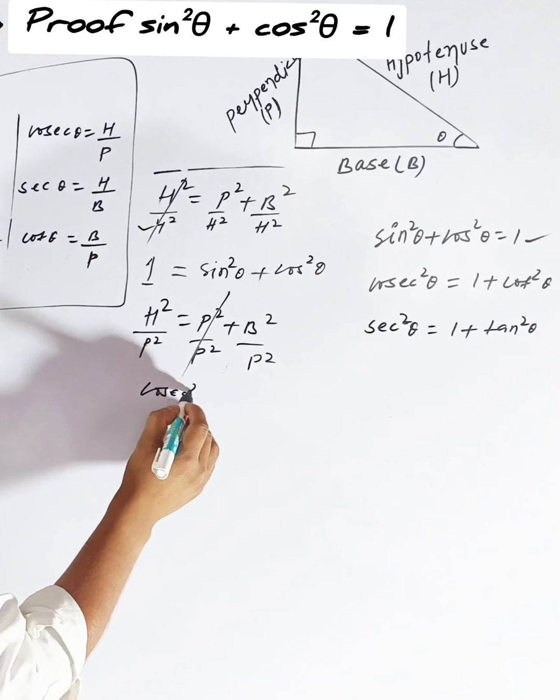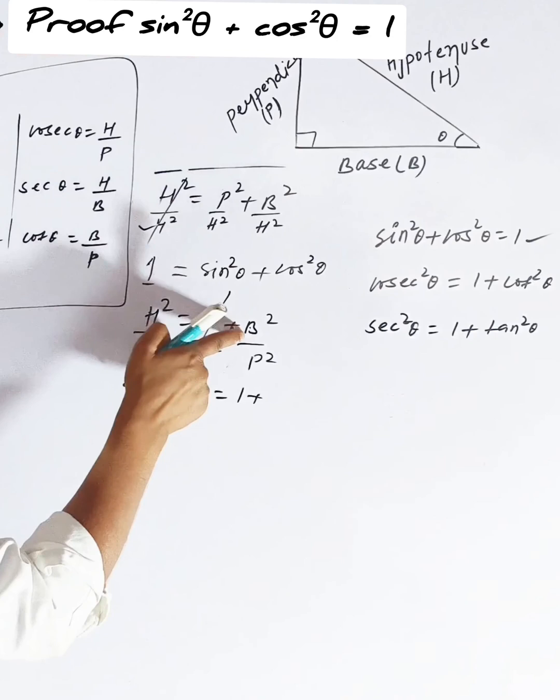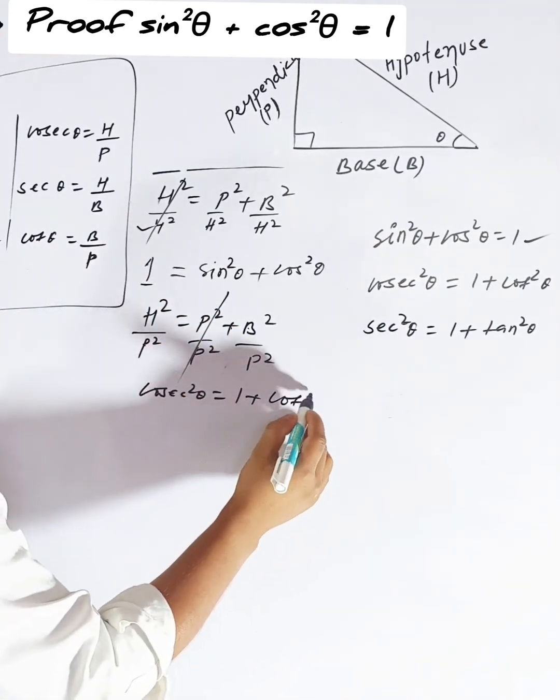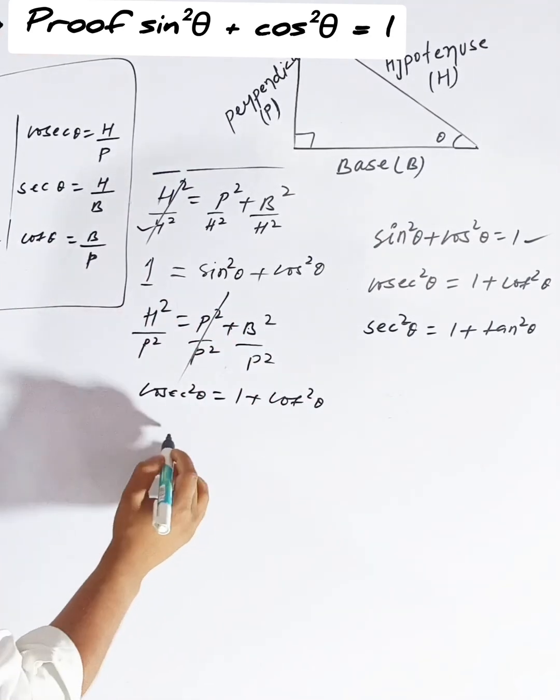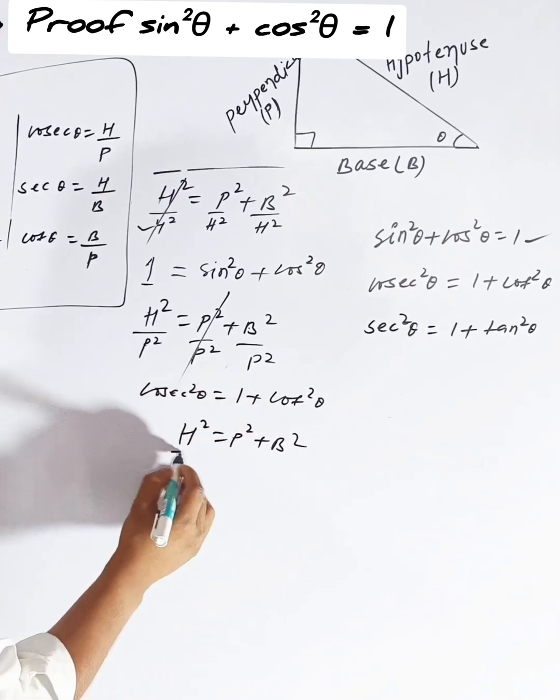h over p will become your cosec squared theta. This will become one, and this b by p will become cot square theta. Apply the third formula one more time.